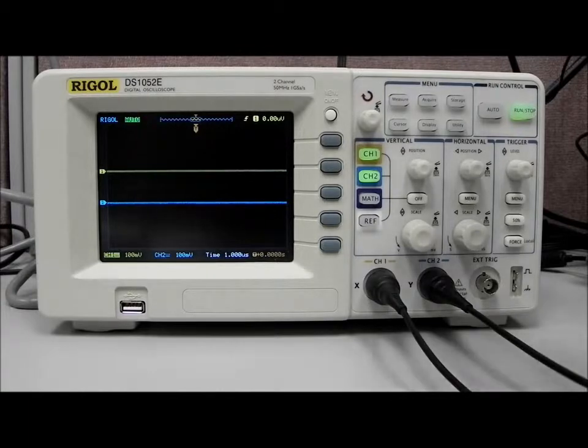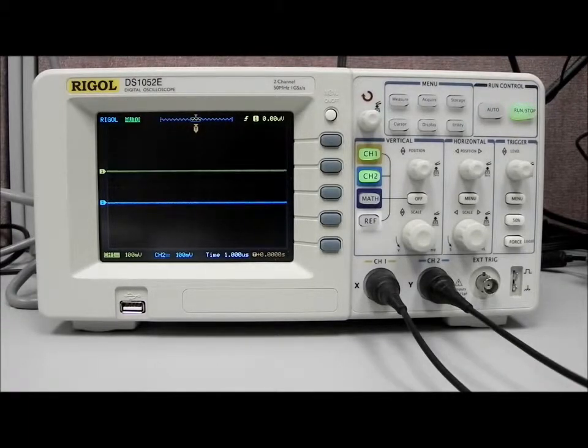Today we're going to walk around some of the features of the DS-1000 series of Rigol oscilloscopes. In this particular case we have the 1052E, which is a two channel 50 megahertz, one gigasample per second digital oscilloscope.